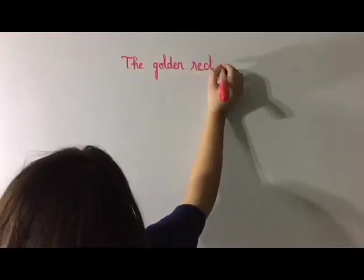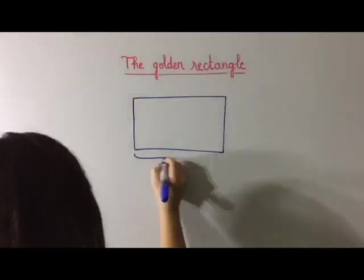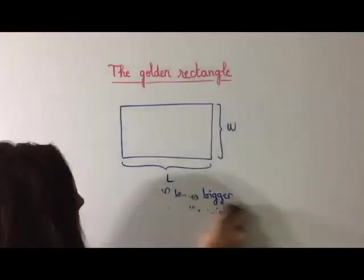Let's move on to the golden rectangle. The golden rectangle is a rectangle where the length is φ times bigger than the width.